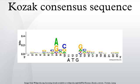The sequence is identified by the notation (GCC)RCCAUGG, which summarizes data analyzed by Kozak from a wide variety of sources. A lower case letter denotes the most common base at a position where the base can nevertheless vary. Upper case letters indicate highly conserved bases — the AUGG sequence is constant or rarely, if ever, changes — with the exception being the IUPAC ambiguity code 'R', which indicates that a purine is always observed at that position.